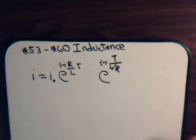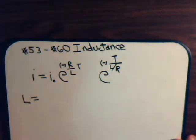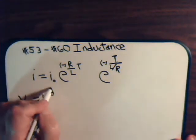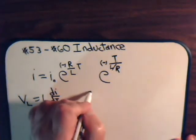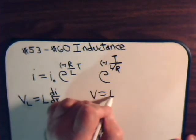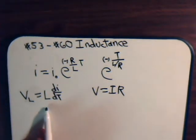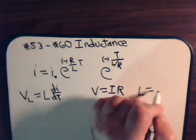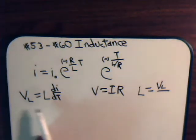And let's see now L. Well, the voltage across an inductor VL, that equals L di dt. Of course, in general, V equals I times R. So L, that equals VL divided by di dt.